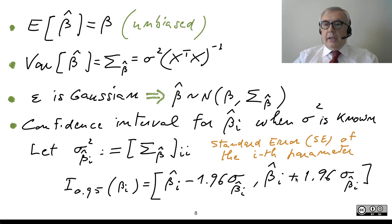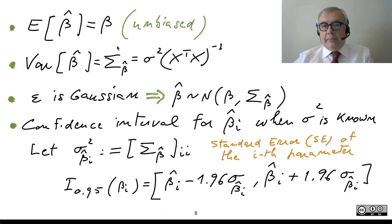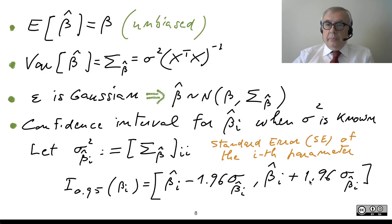So we are able to compute the confidence intervals for the parameters. If we know sigma-square, we get the covariance matrix, take the entries on the main diagonal, and using these entries we can have confidence intervals for all the parameters — which is useful because then we know how much we can trust the values we have obtained.